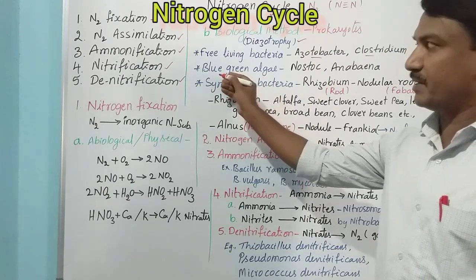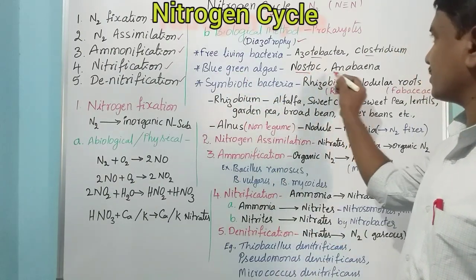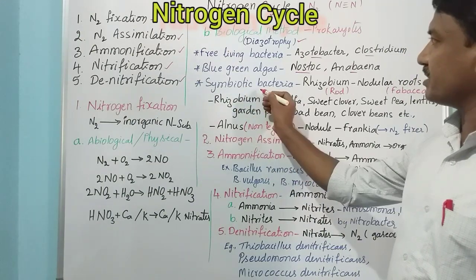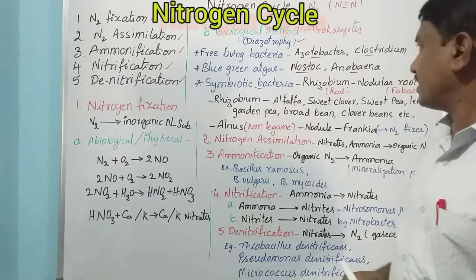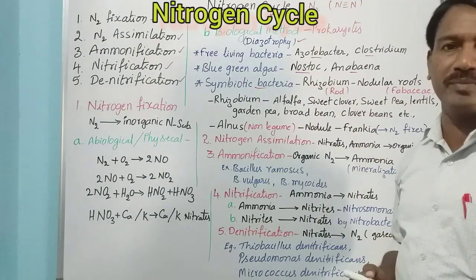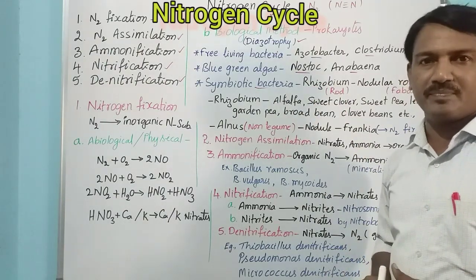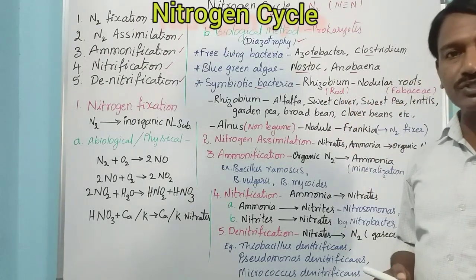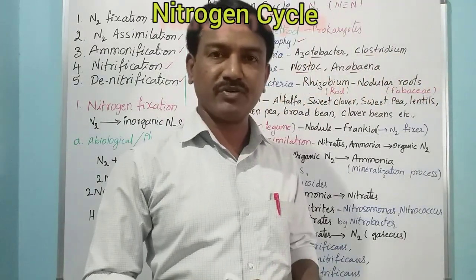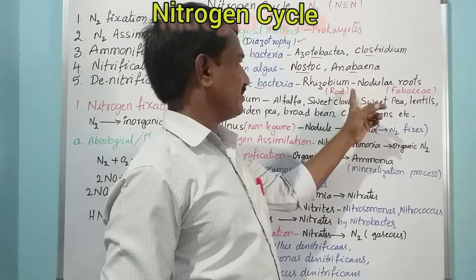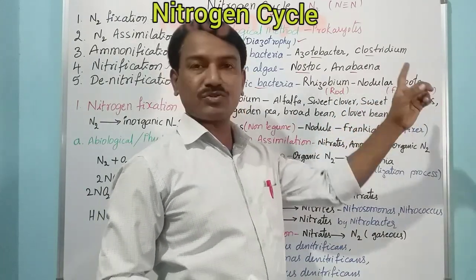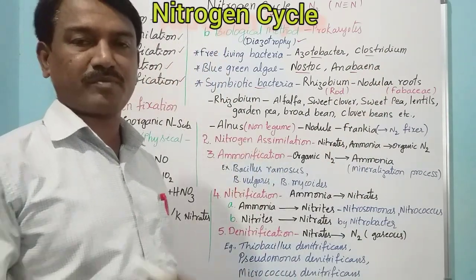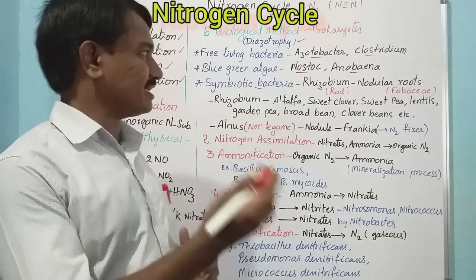The second group is blue-green algae — examples are Nostoc and Anabaena — which are also involved in nitrogen fixation from atmosphere to soil. The third group is symbiotic bacteria; the best example is Rhizobium. Rhizobium is a rod-shaped bacterium present in nodular roots of Fabaceae family members. They are involved in nitrogen fixation, which increases soil fertility and gives more yield to plants.